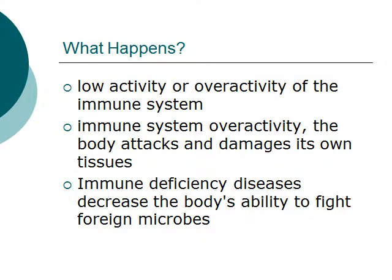So, first of all, what happens when you have an immune system disorder? Well, you would either experience a low activity or overactivity of the immune system. During overactivity, the body would attack and damage its own tissues. On the other hand, if the immune system suffers low activity, there would be some sort of immune deficiency, which would decrease the body's ability to fight foreign microbes and bacteria, causing other diseases or complications.